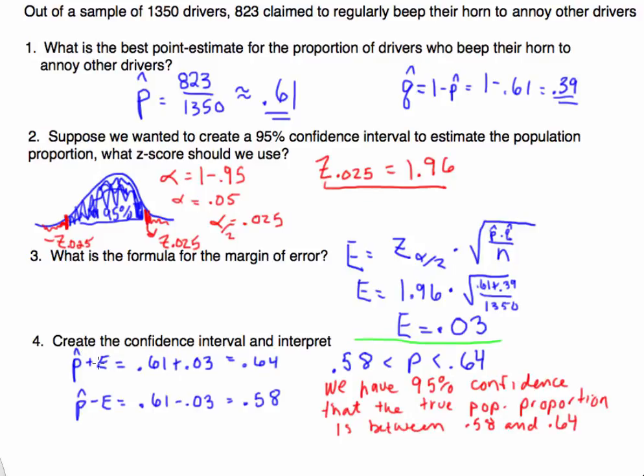To create the confidence interval, we need to start with the point estimate, add the margin of error, then the point estimate, and subtract the margin of error. So I take my point estimate of 0.61 and I add my margin of error, 0.03, to get 0.64. Here I'm going to do the 0.61 minus 0.03 to get 0.58.